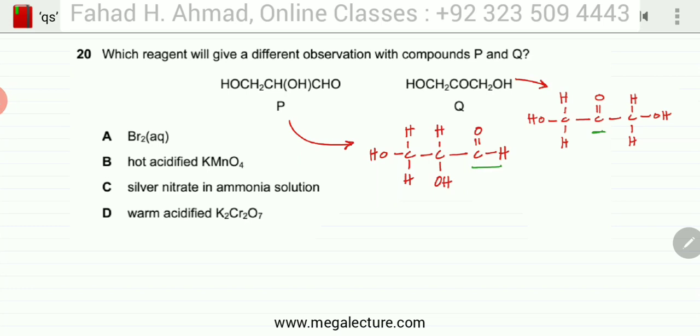One by one we are going to go through all the options. Starting with the first one, bromine. Bromine has a reaction with alkanes under UV light but that's not present. Bromine aqueous also reacts with alkenes. It's a test for unsaturated compounds. These are not alkenes, so bromine is not going to undergo any reaction with either of the compounds.